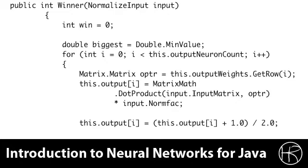We then take the output and map it into a bipolar range so that it is between the values of negative one and positive one.